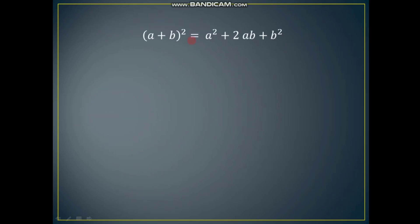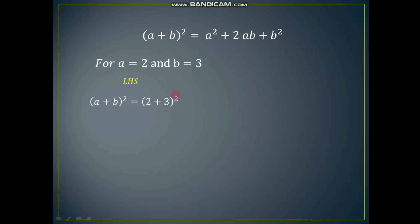Let us have an example of it. Consider the equation (a + b)² equal to a² plus 2ab plus b². It has two variables, a and b. If we substitute a equal to 2 and b equal to 3, the left hand side becomes (2 + 3)² equals 5² equals 25.